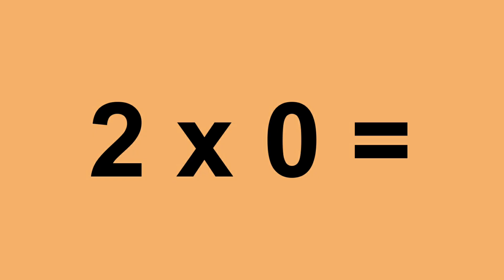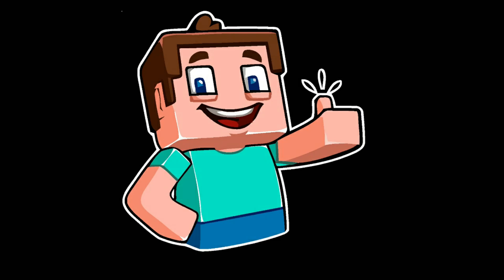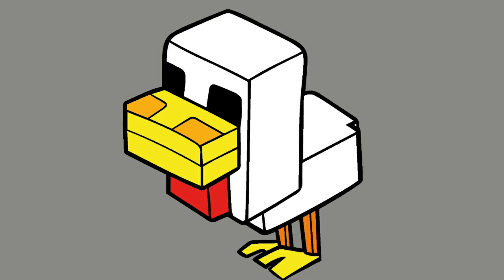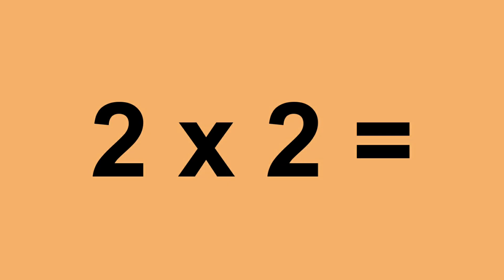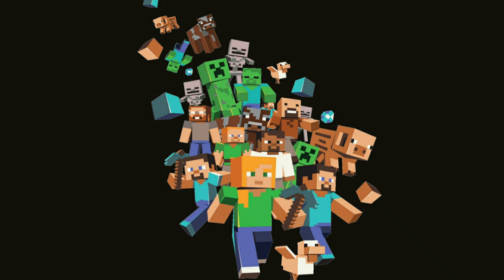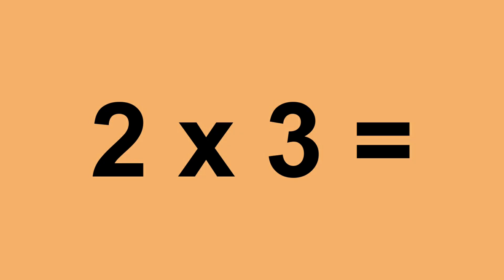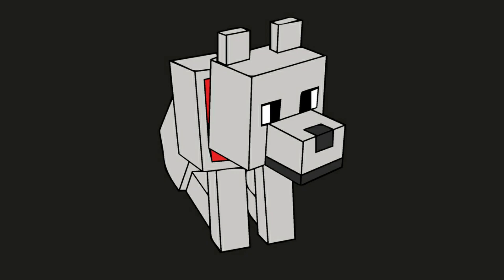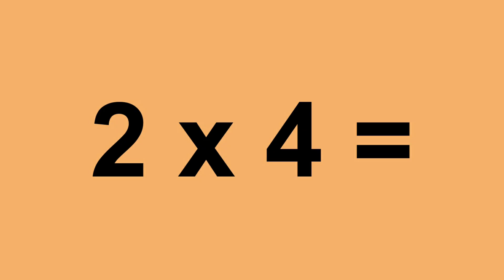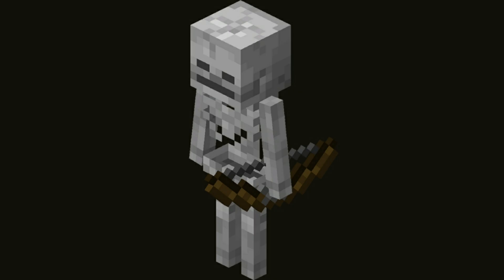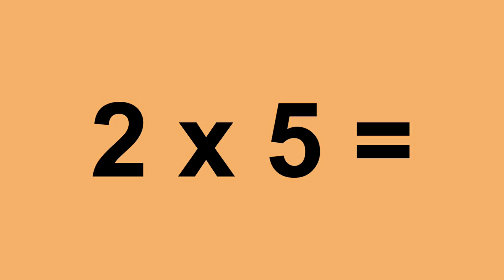2 times 0 equals 0. 2 times 1 equals 2. 2 times 2 equals 4. 2 times 3 equals 6. 2 times 4 equals 8. 2 times 5 equals 10.